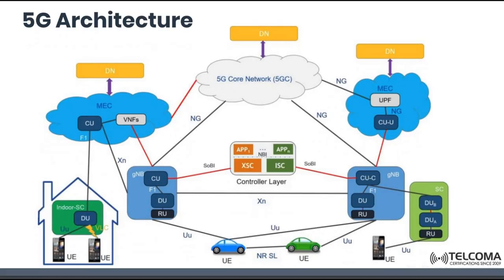5G architecture has a gNodeB in it. Just as we have an LTE NodeB in LTE, we have a gNodeB in 5G architecture. gNodeB is connected to another gNodeB through the XN interface. We have a UU interface between the UE and gNodeB. gNodeB has two blocks in it: the Central Unit (CU) and the Distributed Unit (DU), which are connected via the F1 interface.